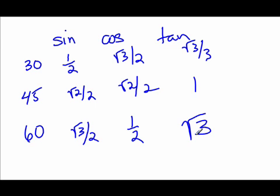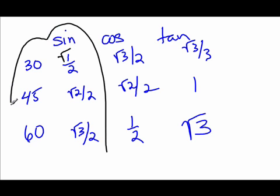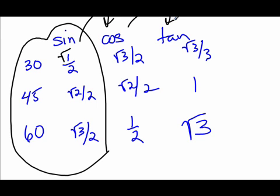Another pattern: the sine column can be seen as root 1 over 2, root 2 over 2, root 3 over 2 for 30, 45, and 60 respectively. I only memorize the sine column, then invert it to get cosine, and divide to get tangent. These are techniques to help you memorize these values pretty quickly.